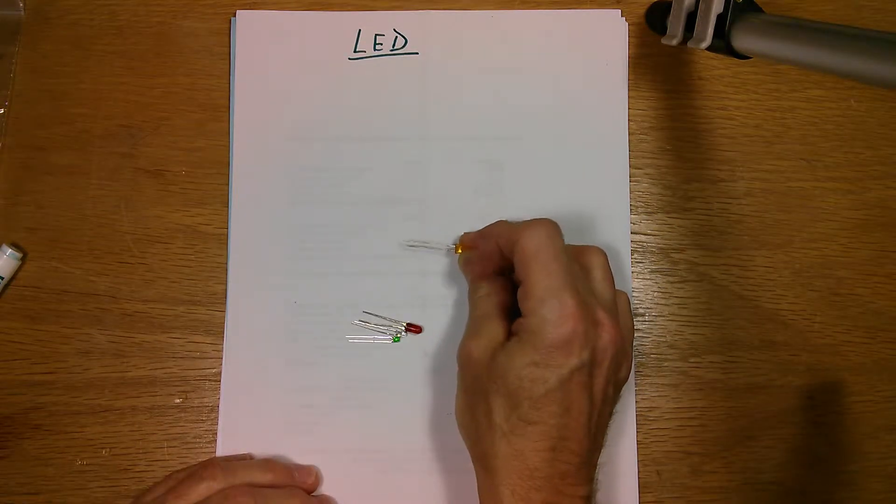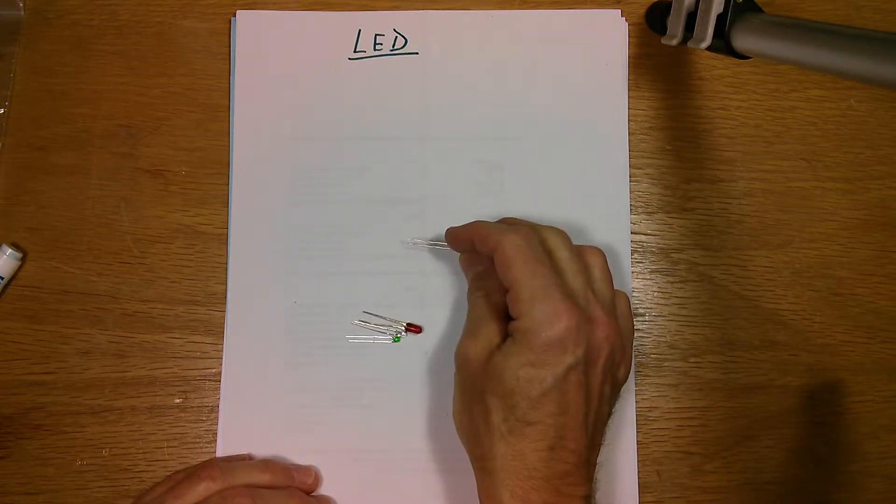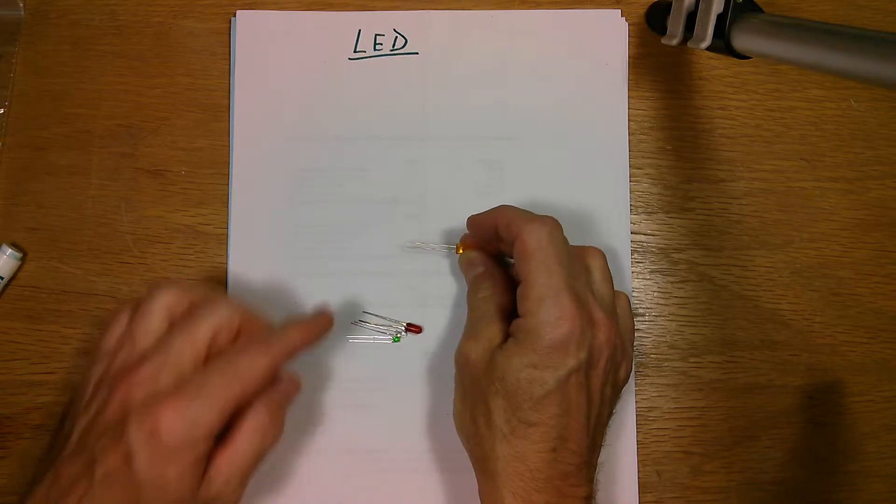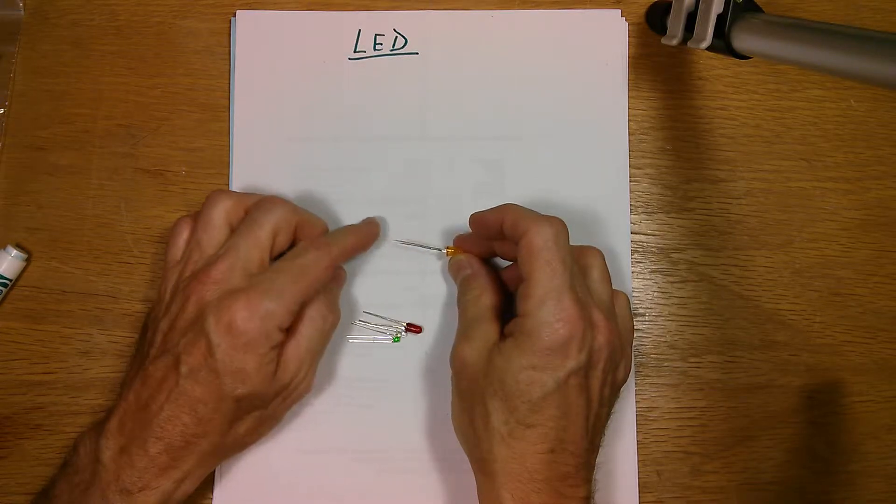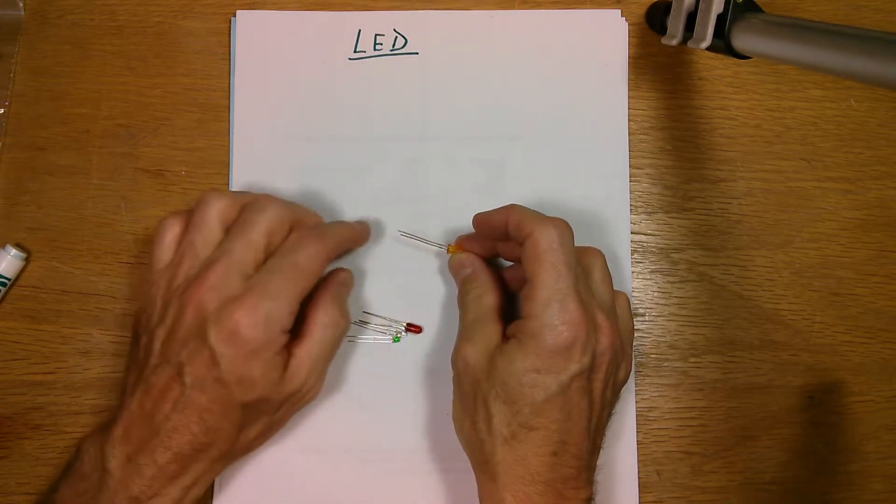Because this is a polarized device the current can only flow through it in one direction. The pins are marked and the longer pin is always the pin that goes to the positive part of the power supply. The current flows into this pin and out the other pin.